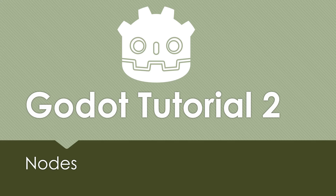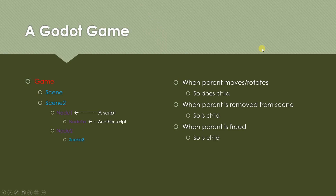Welcome to your second Godot tutorial. The two most fundamental concepts in Godot are nodes and scenes. In this tutorial we're going to cover nodes, and in the next one we're going to go over scenes. You can think of a Godot game as basically a bunch of scenes, and each scene has a bunch of nodes and other scenes inside of it — it's kind of a recursive definition.